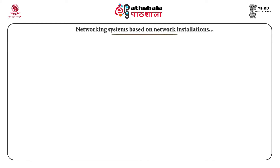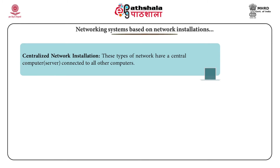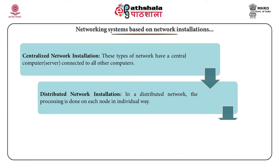Types of networking system based on network installation. Centralized network installation: these types of networks have a central computer server connected to all the computers. The central computer, known as a mainframe computer, does the entire work. The other computers are called nodes and work as only input or output devices. Distributed network installation: in a distributed network, the processing is done on each node individually because new personal computers have higher processing capacity and higher memory. Using the distributed network, more data is processed in less time, increasing efficiency.